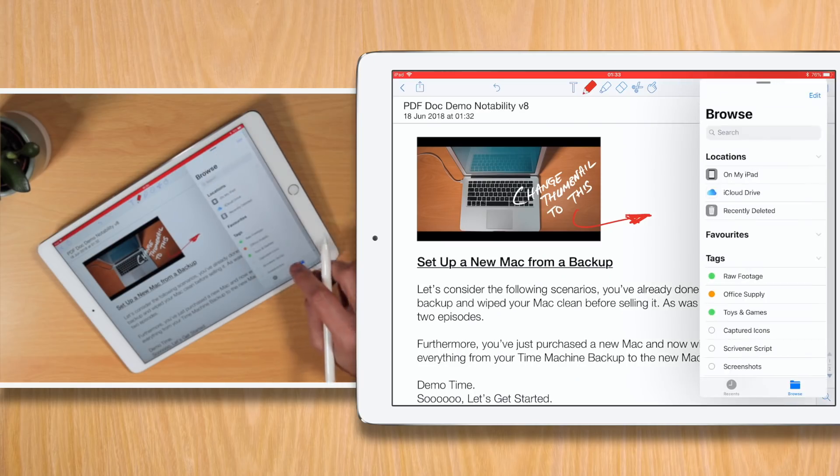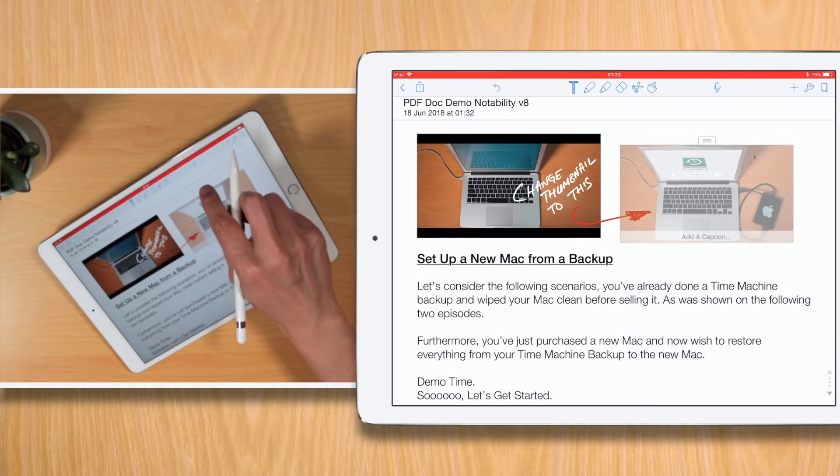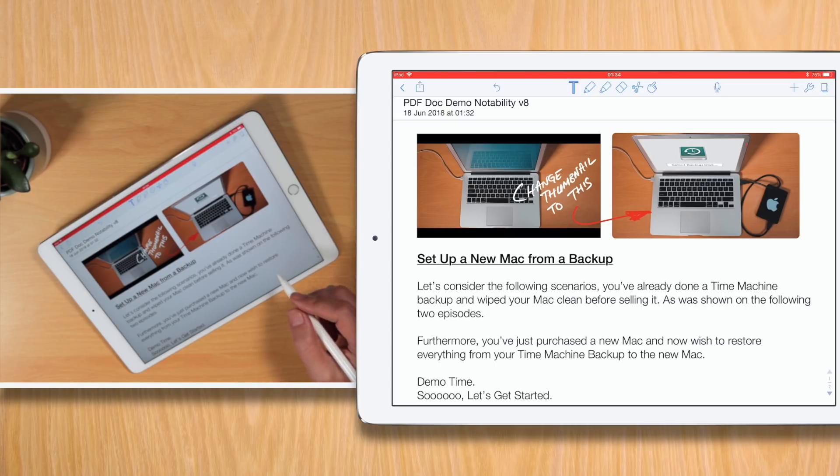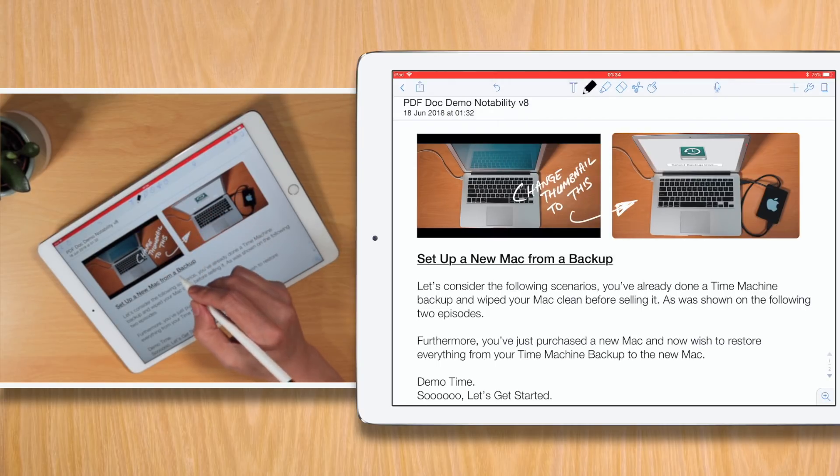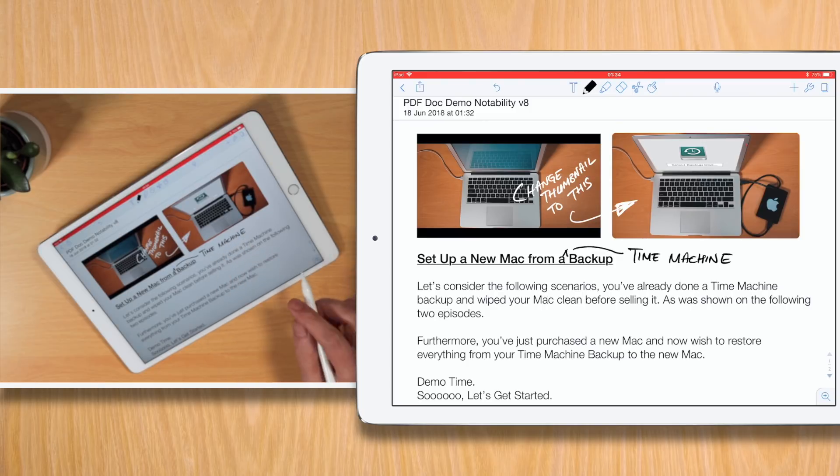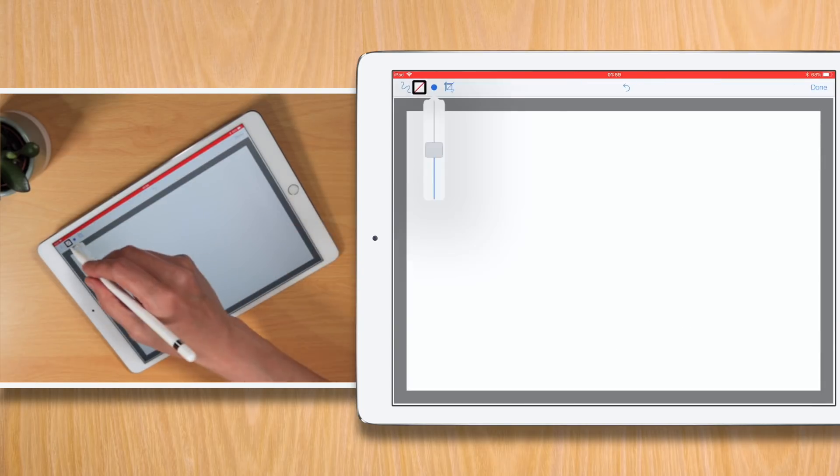Notability is a powerful yet simple note-taking app that gives you the ability to combine text and your handwriting to annotate PDF documents, markup photos, sketch illustrations and offers a wide range of note-taking and sketching tools at your disposal.